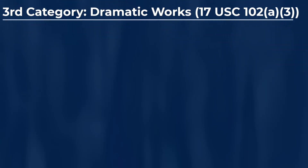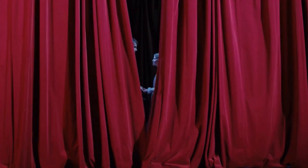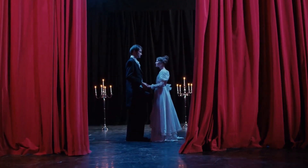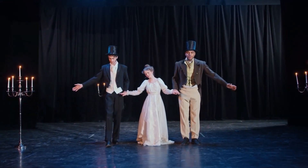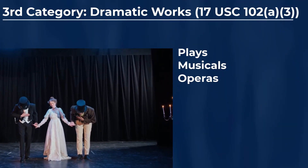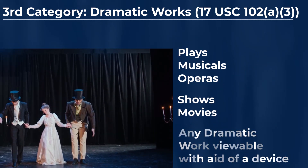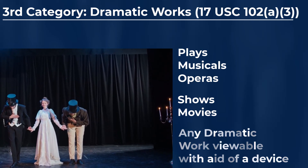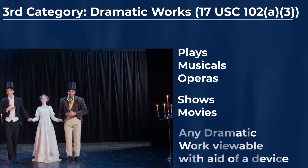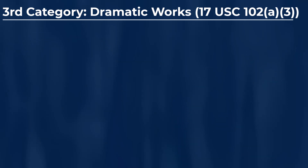The third category of creative works that can generally be protected by U.S. copyrights is for dramatic works, including any accompanying music. Dramatic works may include things like plays, musicals, operas, and the like — basically things that you would watch at a theater. However, dramatic works can also include dramas you would see on TV in a series format, or something you'd see in a movie format, whether on the big screen or at home. Depending upon how the given dramatic work is expressed, this third category may overlap with some of the other categories, just like we saw with music.